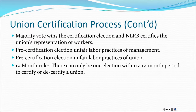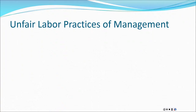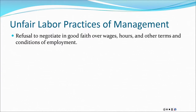Once there's a union certification election, under the 12-month rule you can't have another vote to certify or decertify a union. After a union is certified as the collective bargaining representative of the employees, the collective bargaining process begins. The union negotiates for the members, and the members' only meaningful participation — other than their vote to ratify the collective bargaining agreement — is of no further consequence.